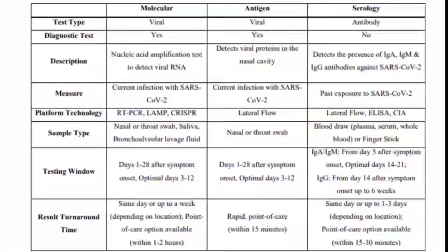There are also other platforms like LAMP — RT-LAMP, which stands for reverse transcription loop-mediated isothermal amplification — and also CRISPR. The molecular test tells you about the current infection. Samples usually used for RT-PCR are nasal or throat swabs, saliva, or bronchoalveolar lavage. The testing window for the molecular test is from day 1 to day 28 after the onset of symptoms, with the optimal time frame between day 3 to 12.